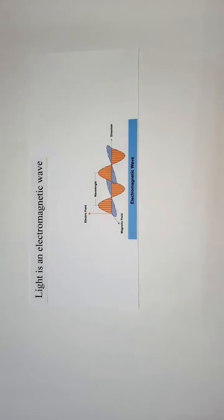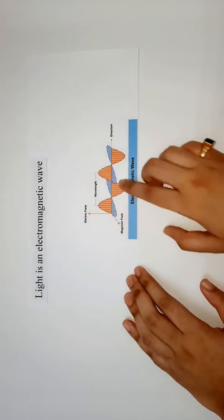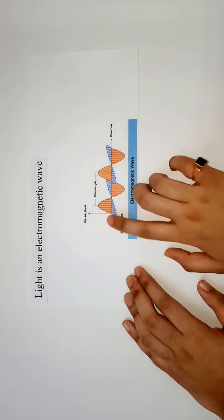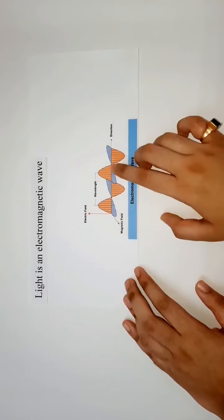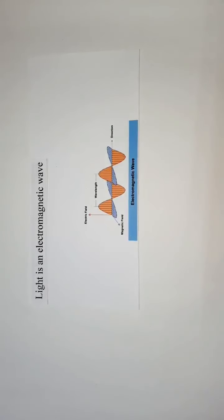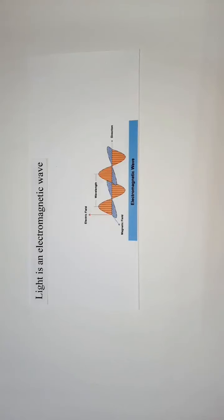Before diving into the topic, here are some prerequisite topics we are going to use in the explanation of scattering of light. First, we must understand that light is an electromagnetic wave. Light consists of oscillating electric and magnetic fields which are perpendicular to each other, and both are perpendicular to the direction of propagation of light. Light is similar to waves on a string or ripples in a pond. Just like ripples in a pond are disturbances in water, light is a disturbance in the electromagnetic field.